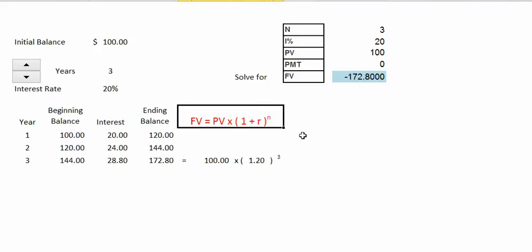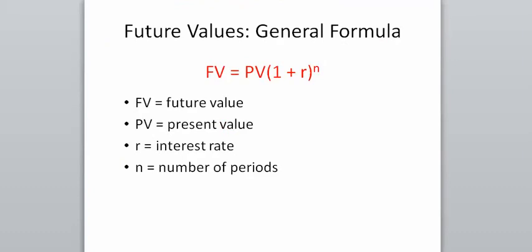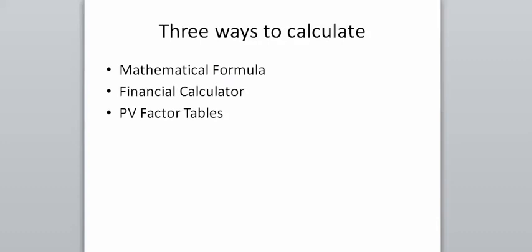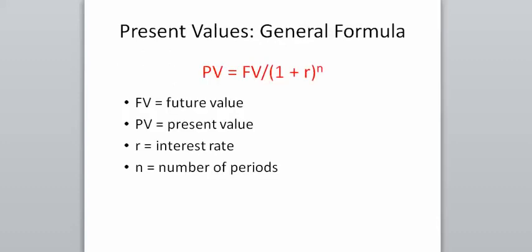Likewise, as the number of periods decreases or the interest rate we can earn is lower, our future values are smaller. We can calculate present values by taking our general future value formula and dividing both sides by the quantity 1 plus R to the N. The present value is simply equal to our future value divided by 1 plus R to the N. Like with future values, there are three ways to calculate a present value: with a mathematical formula, a financial calculator, or a present value factor table.